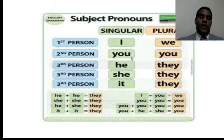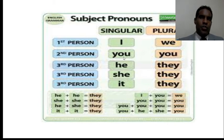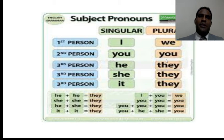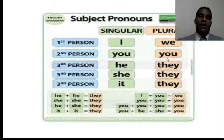We have one 'you' for singular — for example, 'you are a student' means I'm talking to one person. And we have 'you' to talk about plural — for example, if you are a group of students and I want to use the plural form, I say 'you are students,' meaning I'm talking about a group.